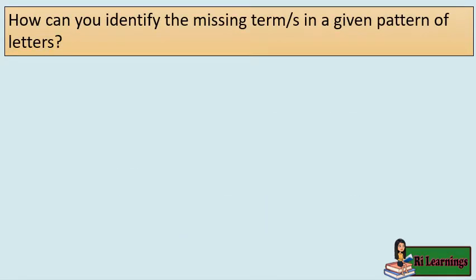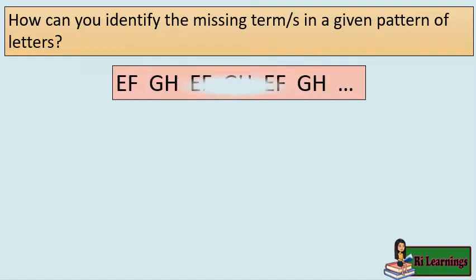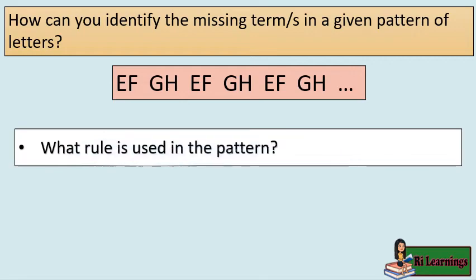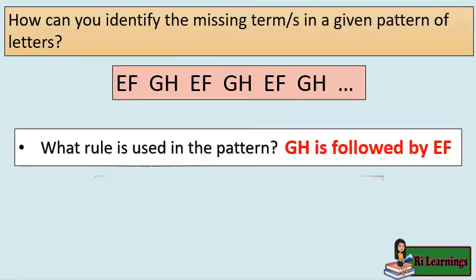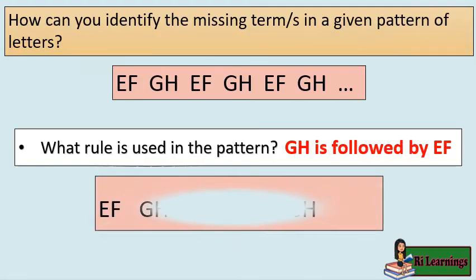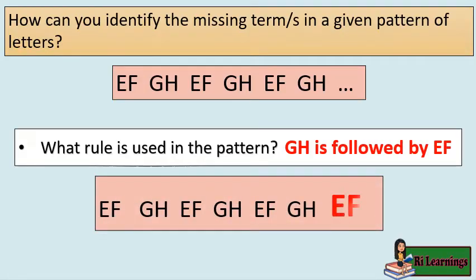How can you identify the missing term in a given pattern of letters? EF, GH, EF, GH, EF, GH, EF, GH, blank. What rule is used in the pattern? GH is followed by EF. The missing term is EF.